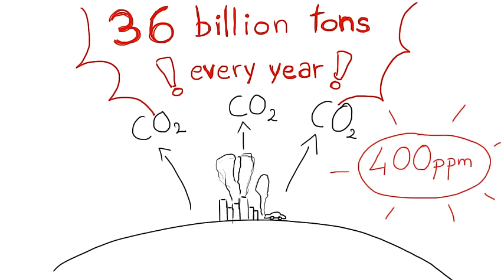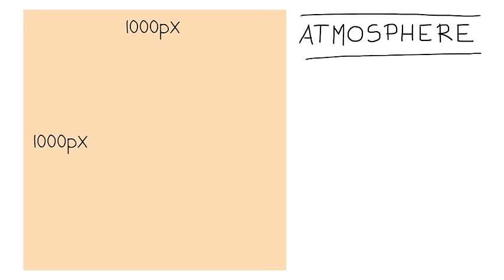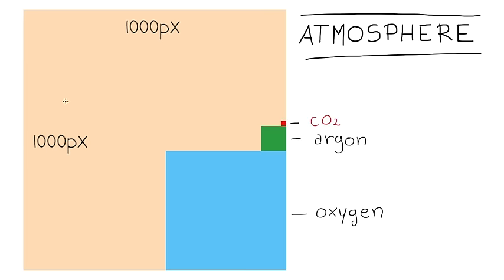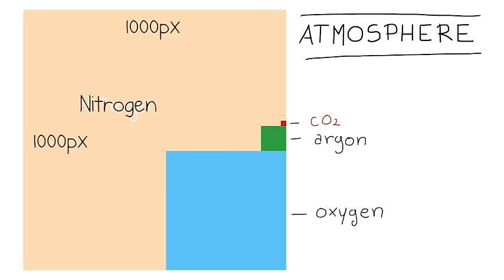Okay, wait a minute, what does that mean? Well, imagine the atmosphere as this square. Let's make it 1000 pixels on each side, so that there is a total of 1 million pixels. This is how much oxygen there is. This is argon. And this is CO2. It's a teeny tiny square of just 20 pixels on each side. It's so small it's hard to see when you zoom out.